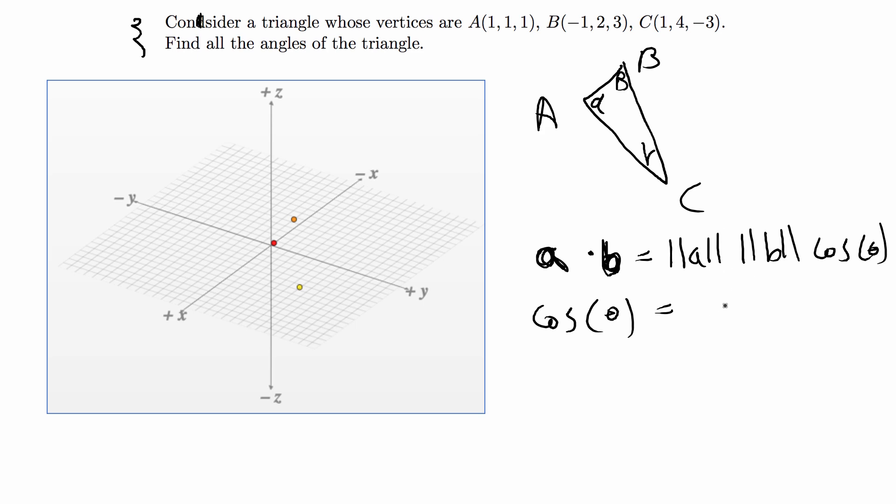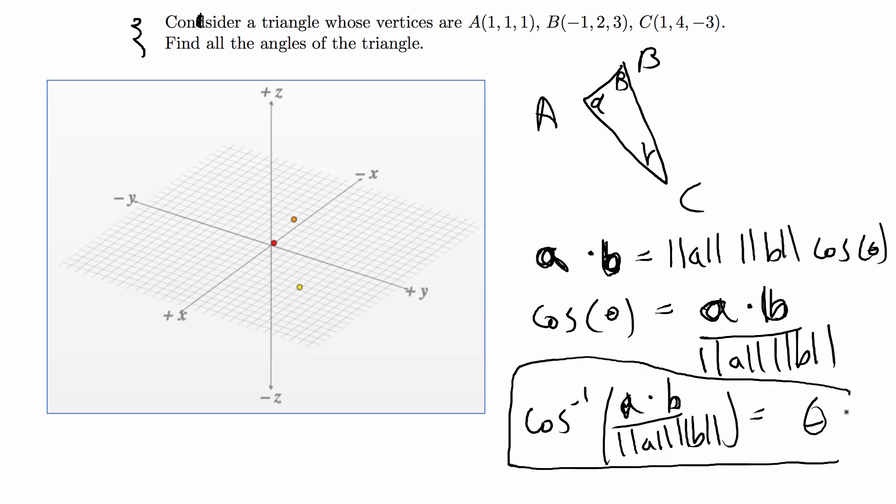So if we just divide by the magnitudes we have cosine of theta is equal to the dot product of vectors a and b divided by their magnitudes. And then furthermore we can say the inverse cosine of the right-hand side gives you theta. So this really is the formula that we're going to be using and we have enough information given the points to make vectors out of the points and from these vectors you can easily get their magnitudes and their dot products. So that's how we're going to solve this problem.